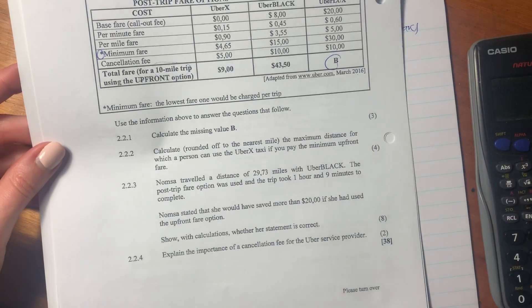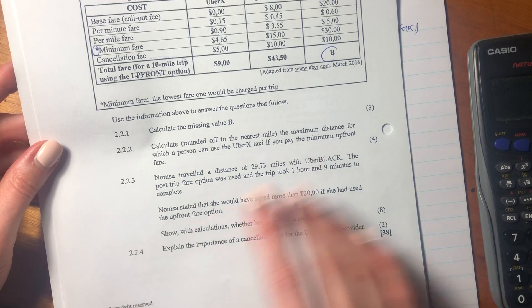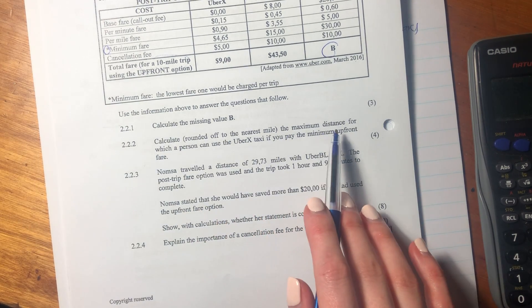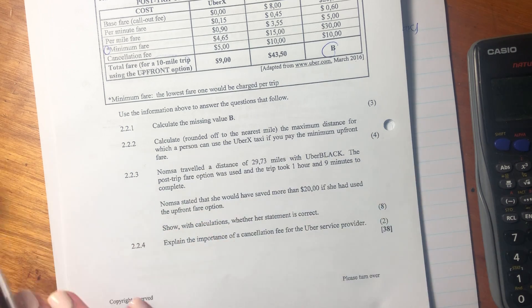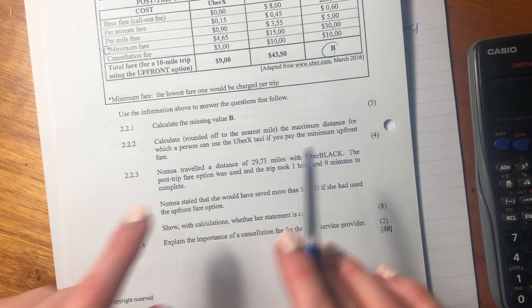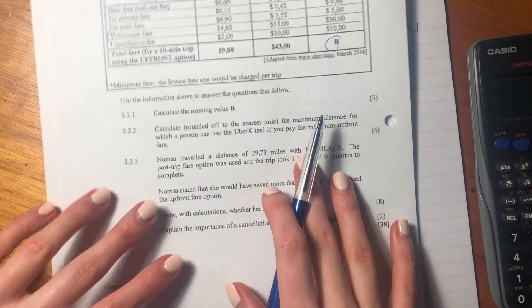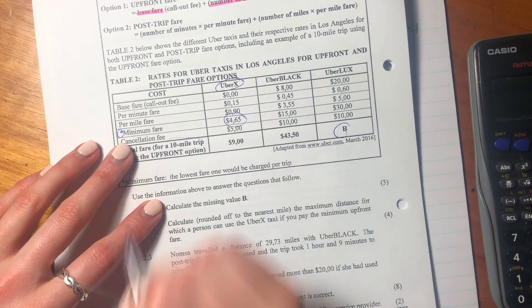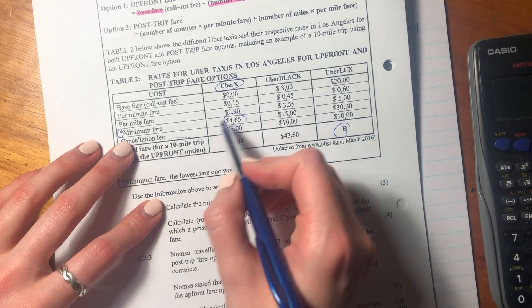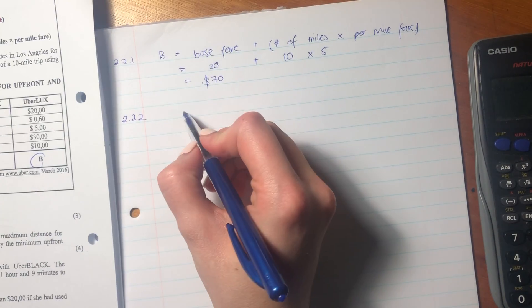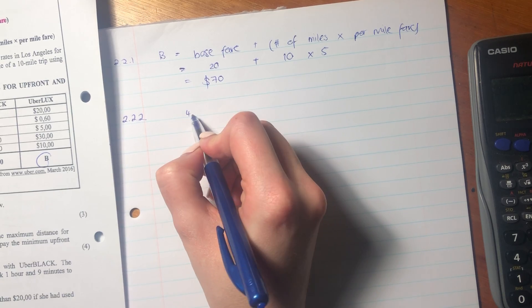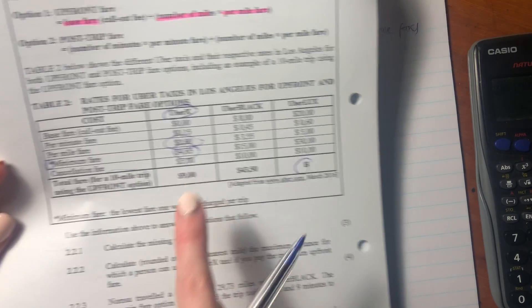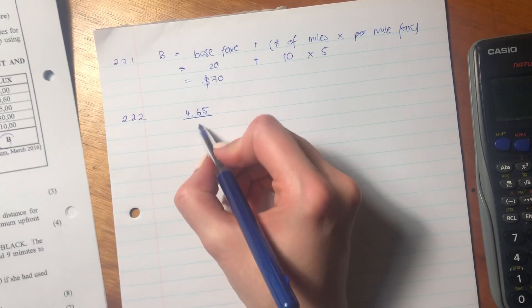The next question, which is for one more mark, says calculate rounded off to the nearest mile, the maximum distance for which a person can use the UberX taxi if they pay the minimum upfront fare. So UberX is this one here. The minimum fare is this one here, and the per mile fare is 0.9. So we're going to say, well, the minimum fare is this amount and we're going to divide that by the fare of each mile.